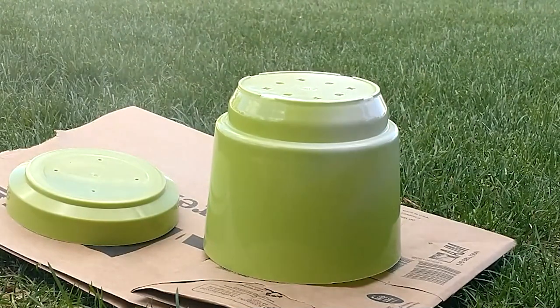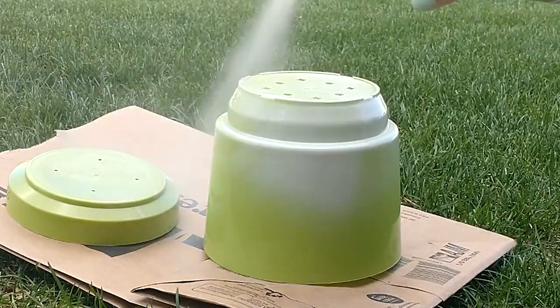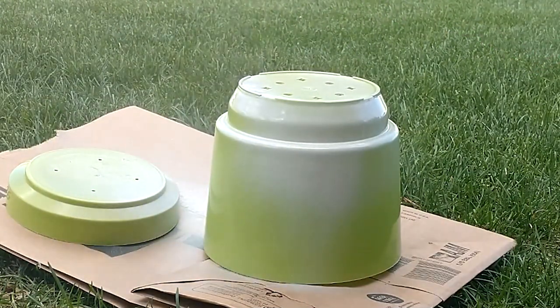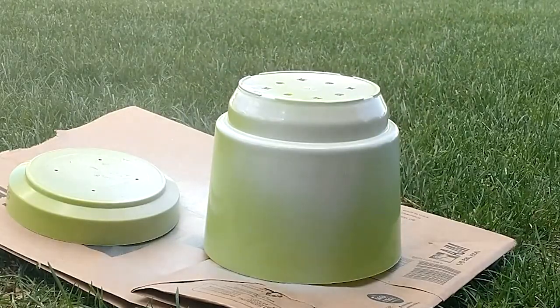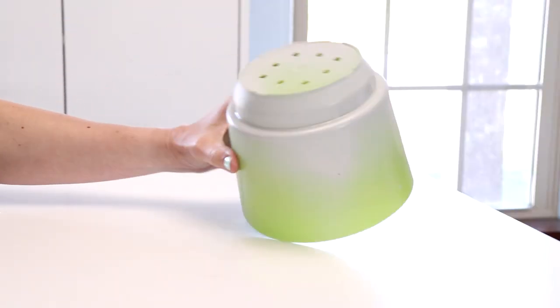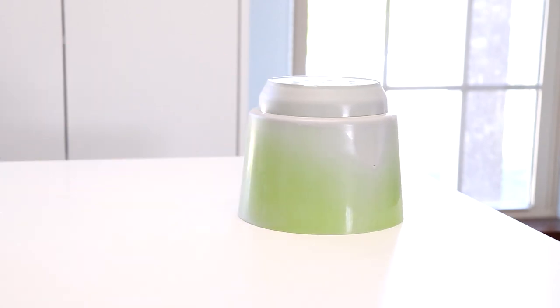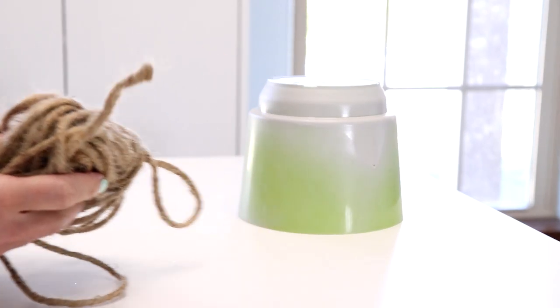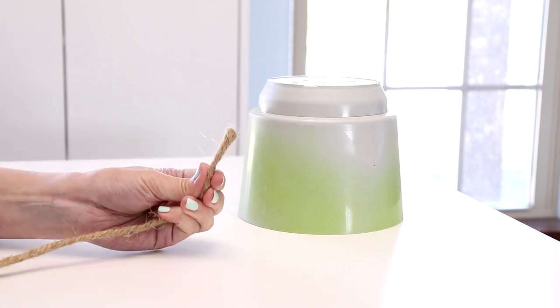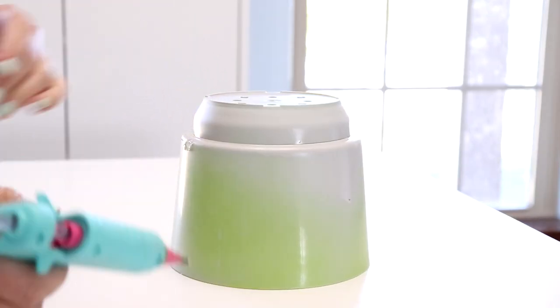Then we're going to take this nice thick rope, you can find this at Dollar Tree as well, and grab that hot glue gun and just wrap the rope all around the main part of the planter.